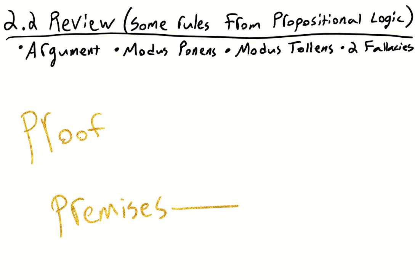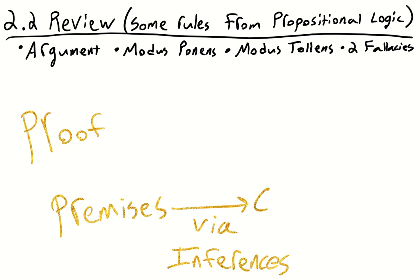We then, through inference or multiple inferences, attempt to prove or derive new additional sentences, or propositions — that is to say, a conclusion or multiple conclusions.